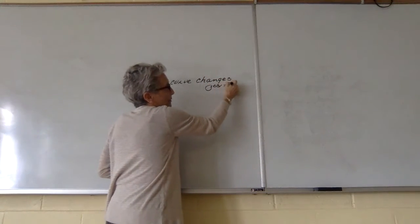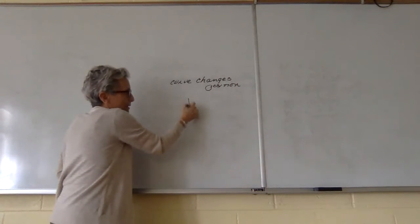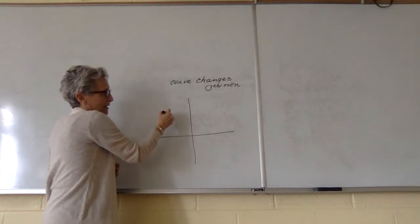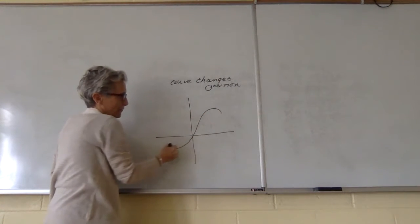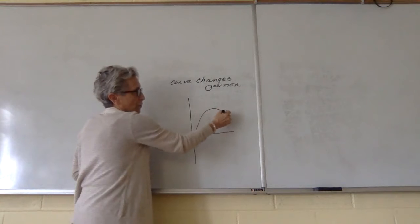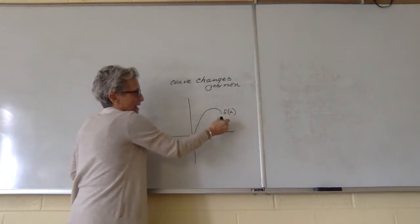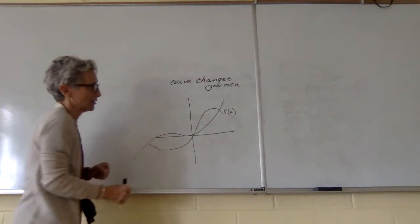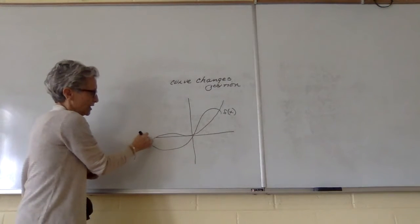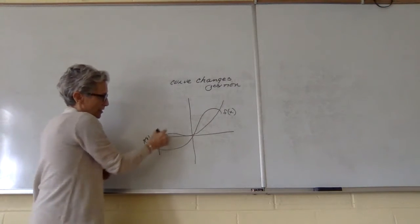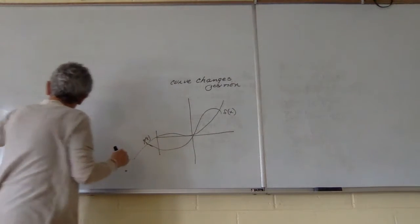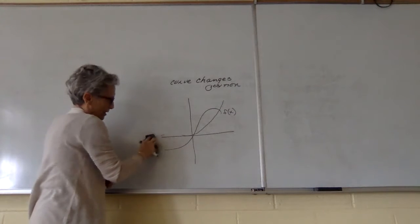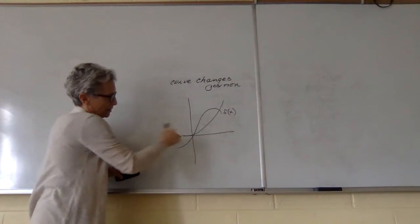And what do I mean by that? What I mean by that is if I have a situation, let's say where I have a curve here, which I'll call F of X, and then I have a curve here, which I'll call G of X, then your boundaries...